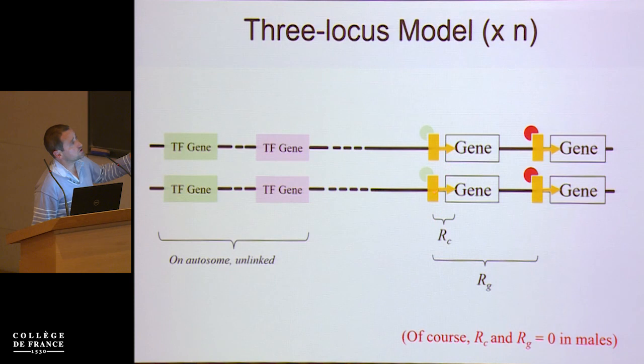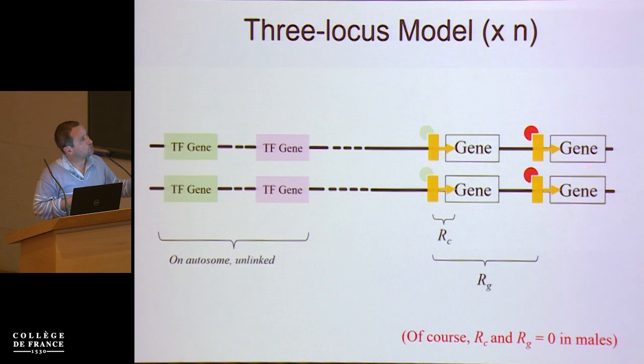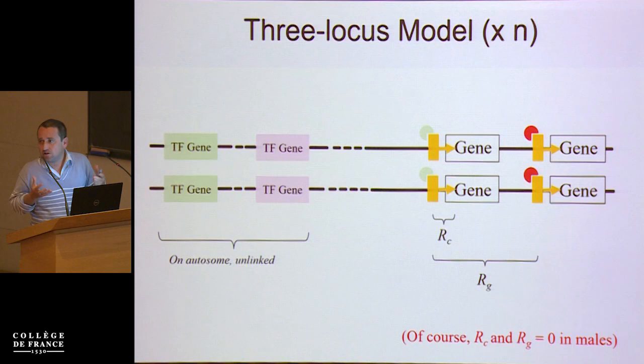There are two recombination rates that are very important here. The recombination rate between the cis regulator and the gene is typically very small because cis regulators are usually right next to the gene. And you've got the distance between the two genes, the rate RG. Because we are in a model with females and males, this recombination rate is zero in males — there is no recombination in males, only in females.